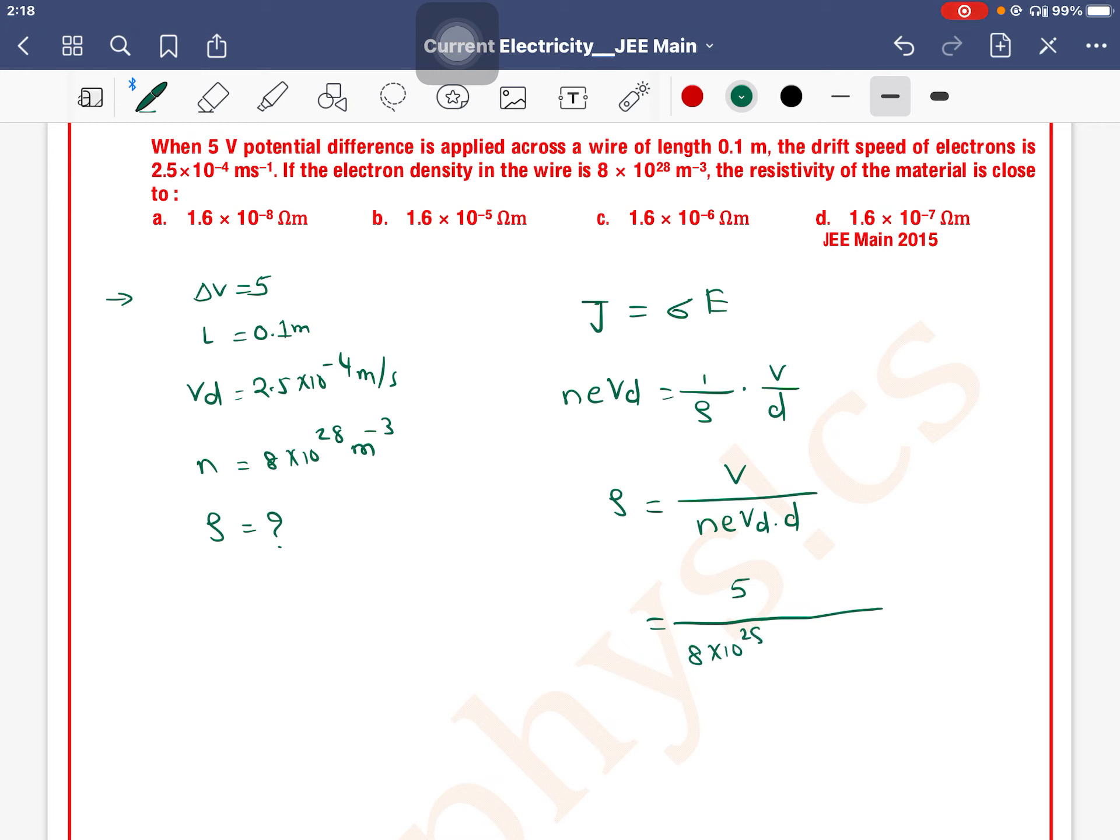Number of electrons per unit volume, the electron density, is 8 × 10^28. The electron charge is 1.6 × 10^-19.